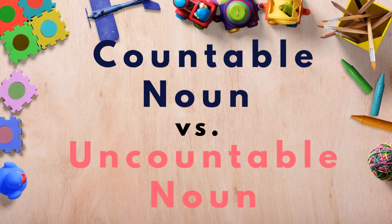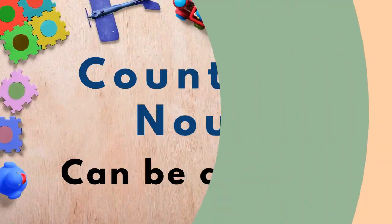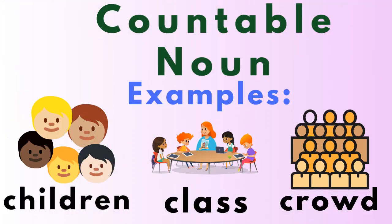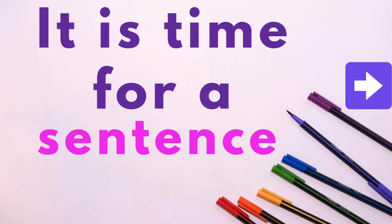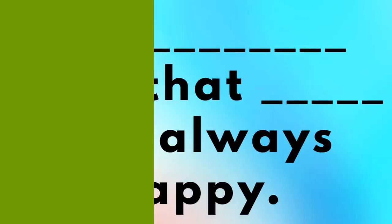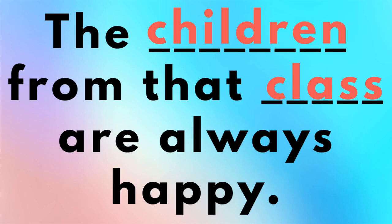And the last categories of nouns: countable nouns versus uncountable nouns. Countable nouns are nouns that can be counted. Examples of countable nouns are children, class, crowd — we can count these. The children from that class are always happy.